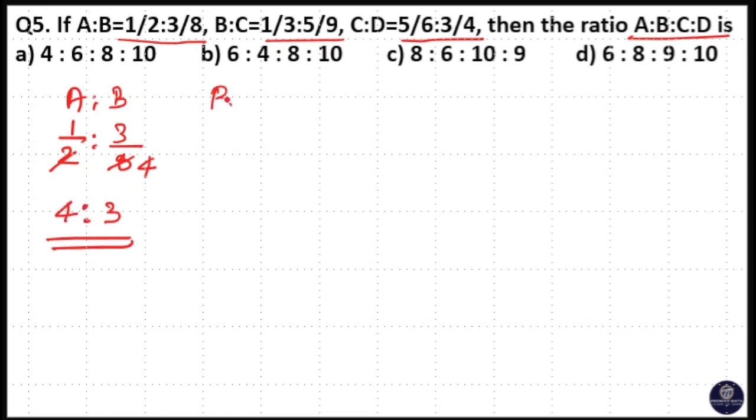Then B is to C is 1/3 is to 5/9. 3 cancels out, that is 3 is to 5 is B and C.